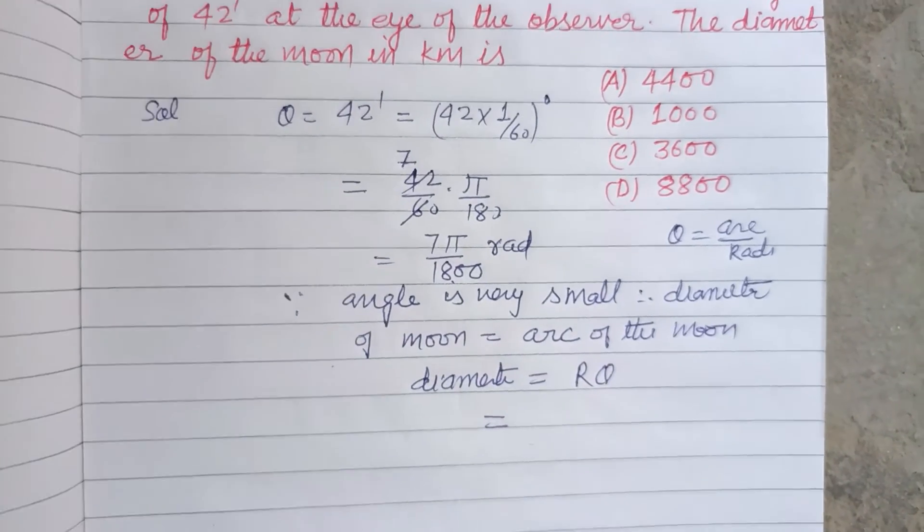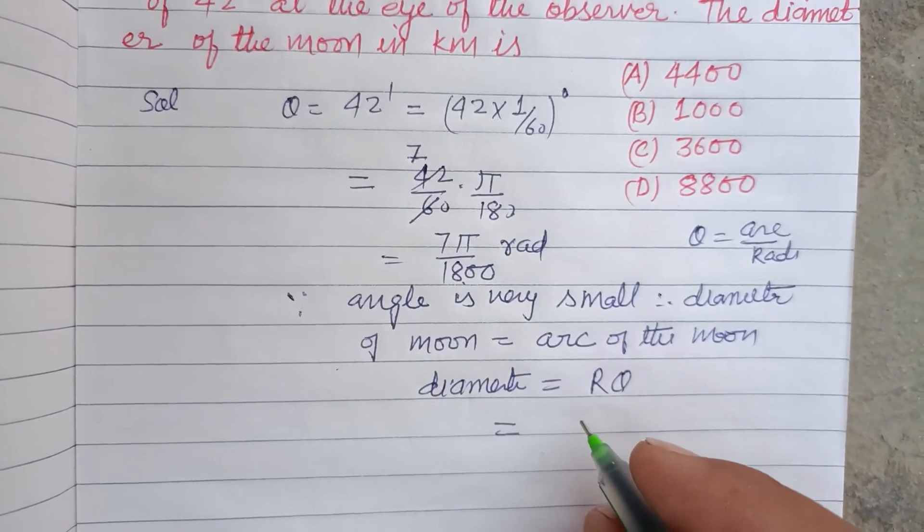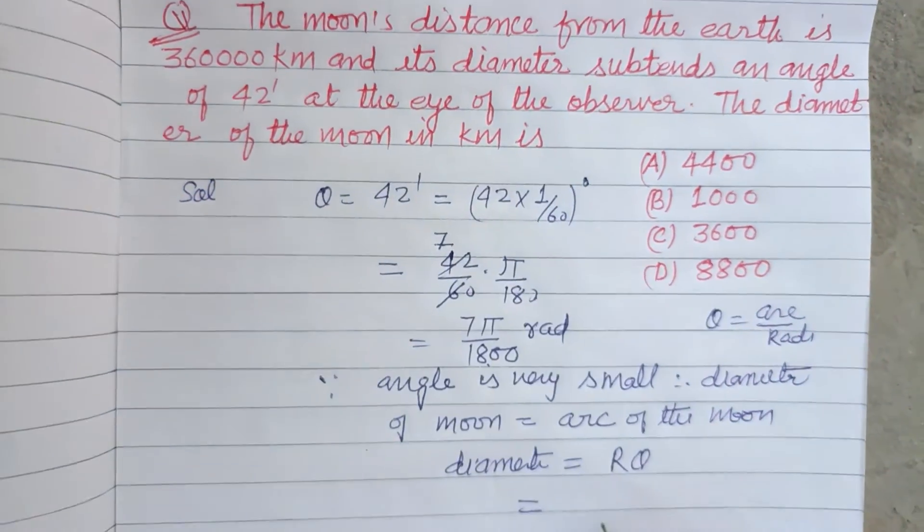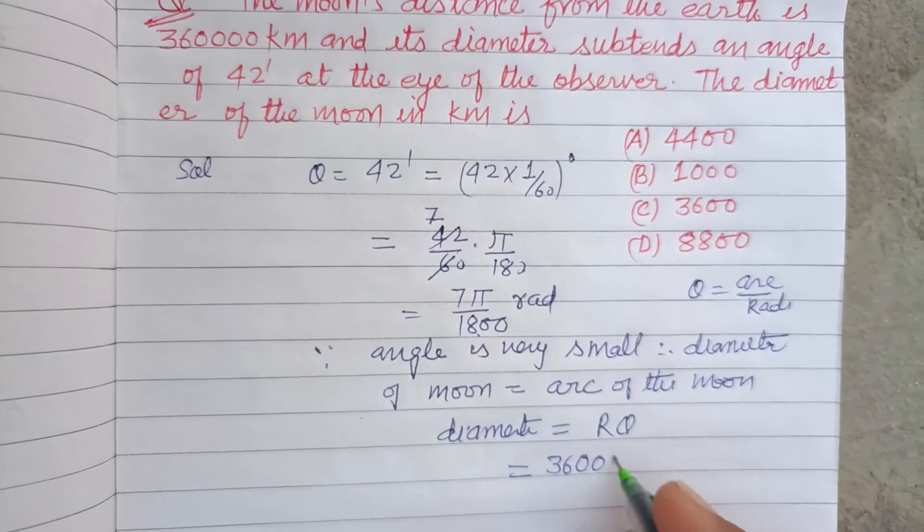R is given to us - the radius is given to us as 360000.